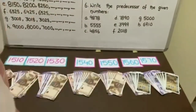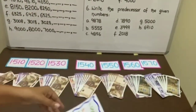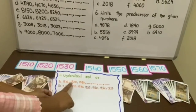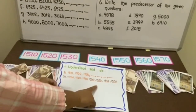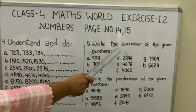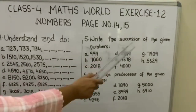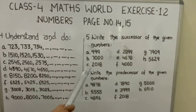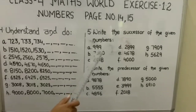Now to answer this in your notebooks, write the question, the part you are answering, and at last the solution. Question number 5: write the successor of the given numbers. We will solve part C. It is 2018.